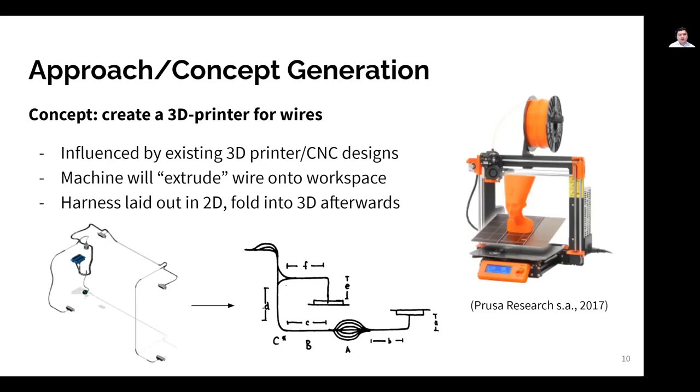The concept that our team settled on was sort of a 3D printer for wires. The functionality between existing 3D printers and our machine are quite similar. Just as a 3D printer would lay down plastic filaments to create a 3D model, our machine would lay down wire onto a workspace to create a 2D representation of the harness, which we could then refold into the full 3D harness.